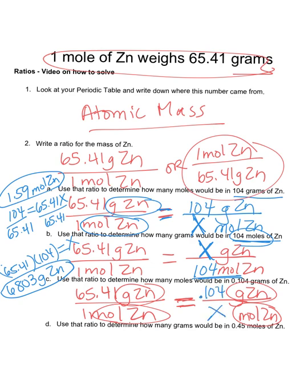Now here I'm going to cross multiply 0.104 times 1 equals 65.4x. Divide both sides by 65.4, and I'm going to get 0.00159 moles of Zn. That's going to be my answer for that.